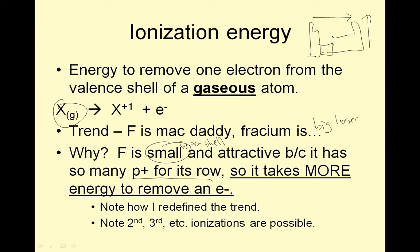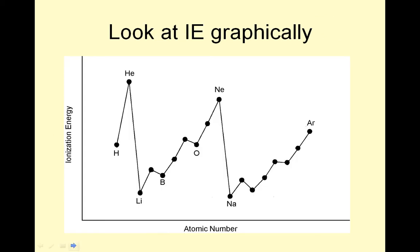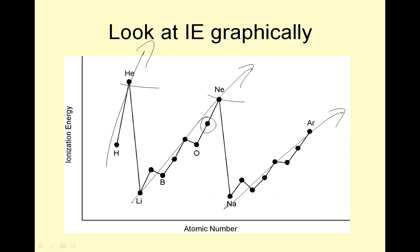There are second and third ionizations possible, so you can keep pulling off electrons. Looking at this graphically, the biggest ionization energies — we typically ignore the noble gases — but fluorine would have the highest of all the others if we cross off the noble gases.